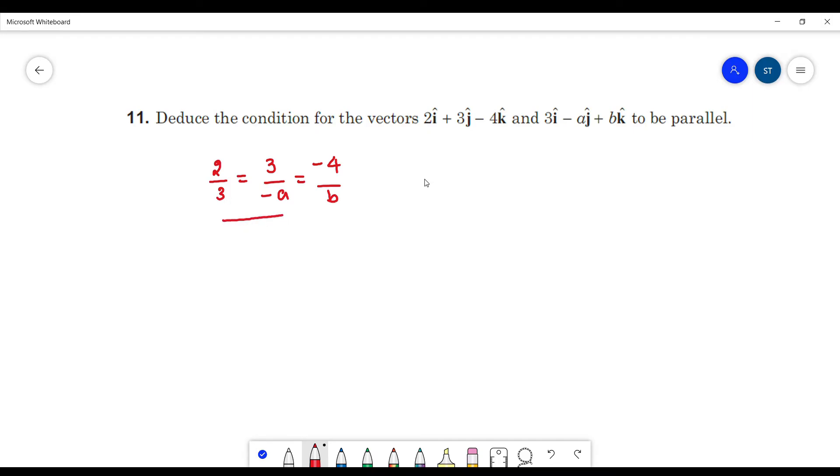So if we equate these two terms, we can say a is equal to minus 9 upon 2, which is equal to minus 4.5.